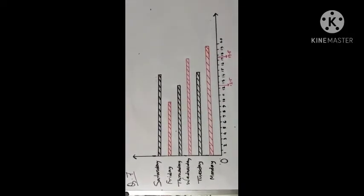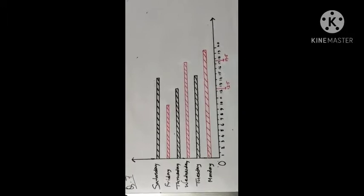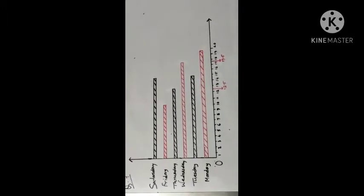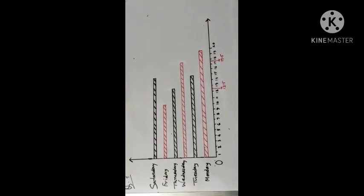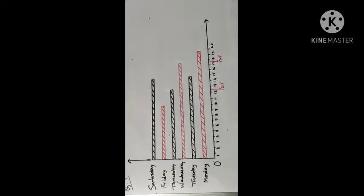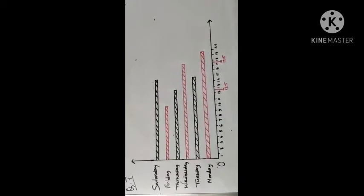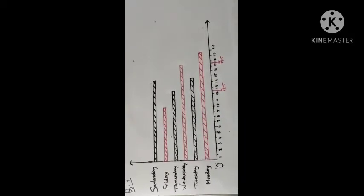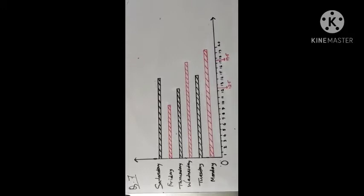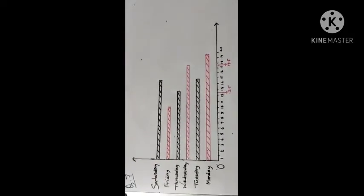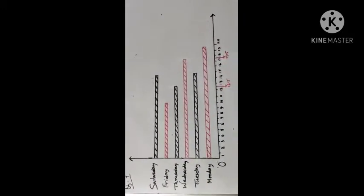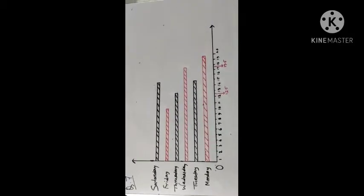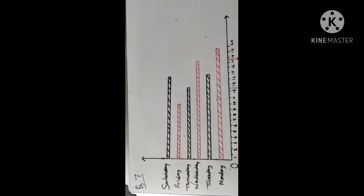So, we draw rectangles of different lengths, keeping the width equal. The length of each rectangle depends on how many bags have been sold. Here, 30 bags were sold on Monday.